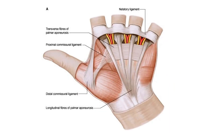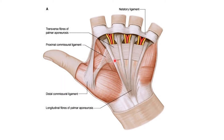Regarding the palmar aponeurosis proper, which is the thick central part, it is triangular in shape with the apex directed proximally and the base directed distally. The proximal end — the apex of the aponeurosis — is attached along the distal border of the flexor retinaculum, where it becomes continuous with the tendon of palmaris longus.